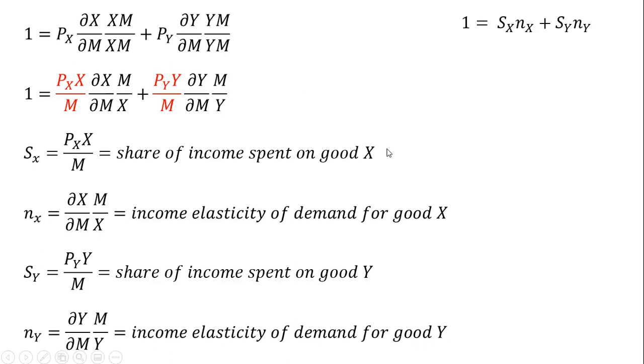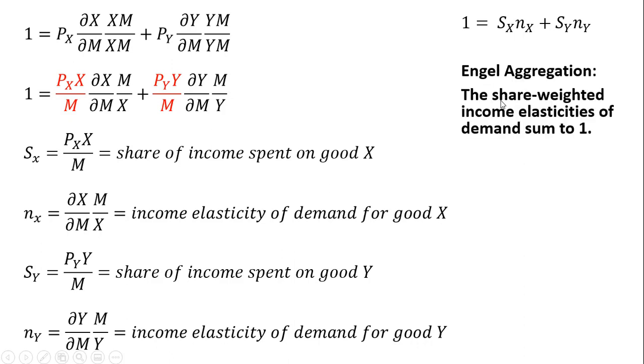So just making some substitutions then, we have the following result. And this is Engel's aggregation. So Engel aggregation is the share-weighted income elasticities of demand are going to sum to one. So the share-weighted income elasticities of demand will sum to one, and that is referred to as Engel aggregation.